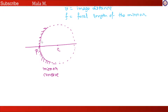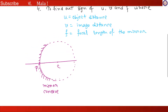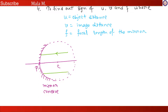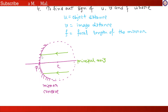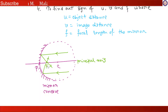We will draw the incident ray, which is perpendicular to the principal axis. This is the principal axis. If the incident ray is perpendicular to the principal axis, then after reflection, the reflected ray passes through the principal axis — so this will be the focus.